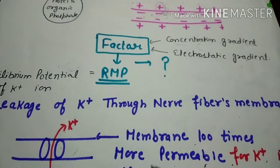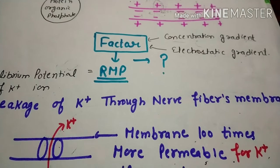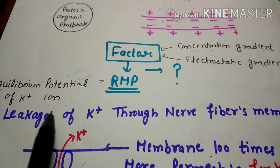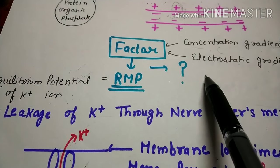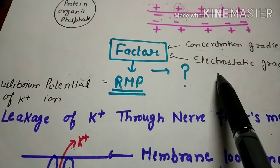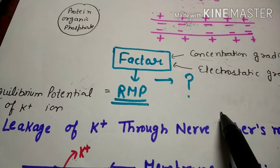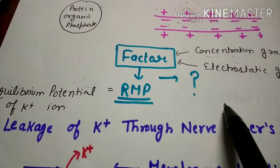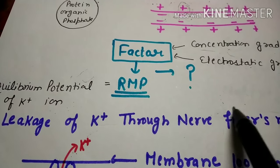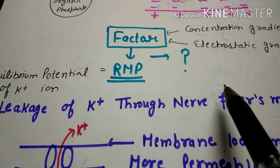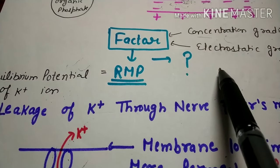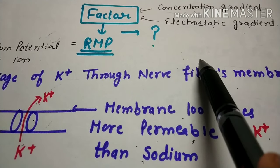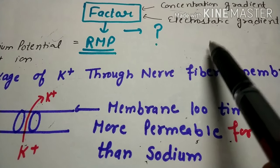We have two ions — sodium and potassium — which play a major role in neurons and nerve fibers. First, consider the sodium ion: its concentration gradient is higher outside and lower inside, so it tends to move from higher concentration towards lower concentration through diffusion. This brings positive charge from outside to inside. Due to this, positive charge accumulates on one side.